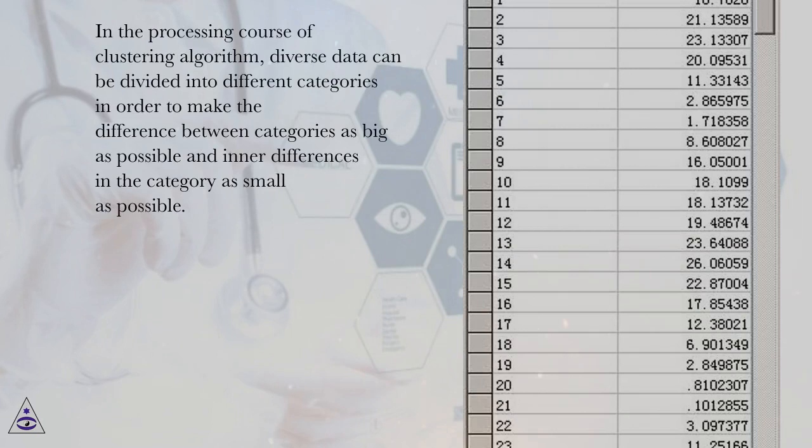In the processing course of clustering algorithm, diverse data can be divided into different categories in order to make the difference between categories as big as possible and inner differences in the category as small as possible.